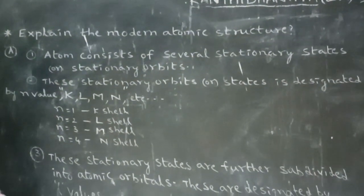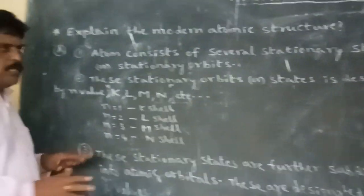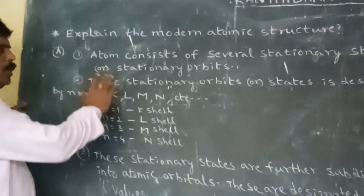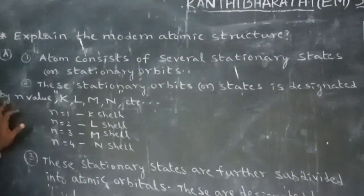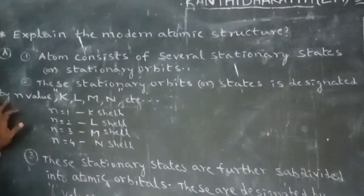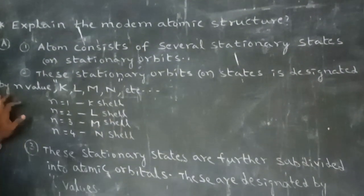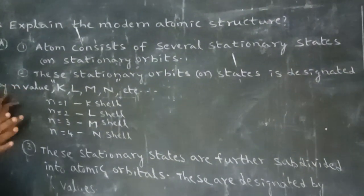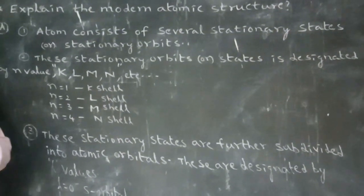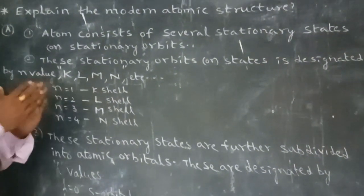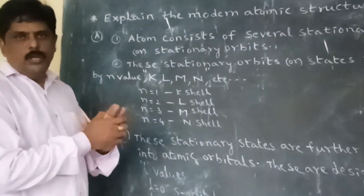This is the last atomic structure you have to know. The atom consists of several stationary states or stationary orbits. Every atom has several stationary states and stationary orbits. These stationary states are designated by N-value.